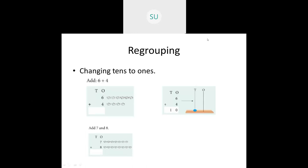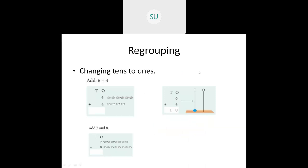Let's see another example: add seven and eight. Hold seven in your fingers and add eight — you get fifteen. In fifteen we have one ten and five ones. So you write five in ones place and one in tens place. We are regrouping: from fifteen ones, we take one ten and send it to tens place, keeping the five ones as ones. This is how you add and regroup by changing tens.